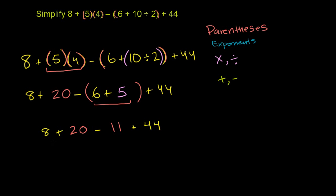And now that we have everything at this level of operations, we can just go left to right. So 8 plus 20 is 28. So you could view this as 28 minus 11 plus 44. 28 minus 11, 28 minus 10 would be 18. So this is going to be 17. It's going to be 17 plus 44.